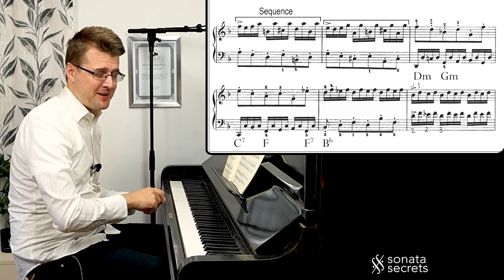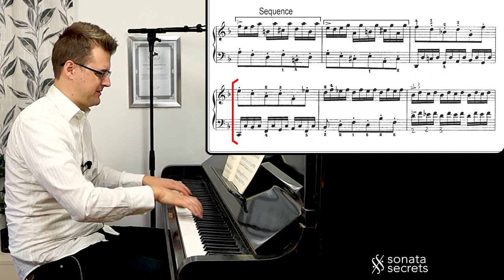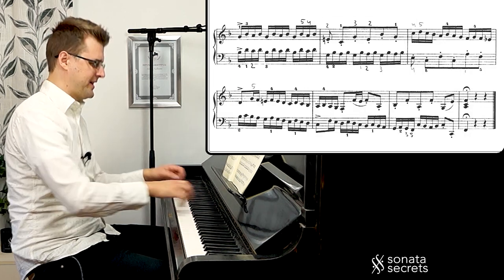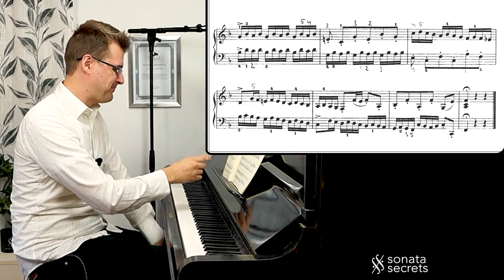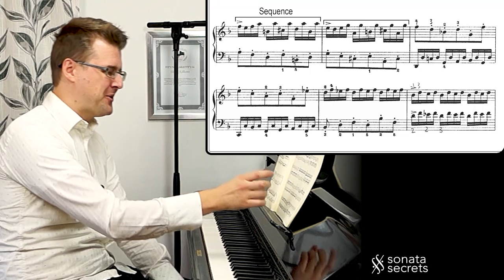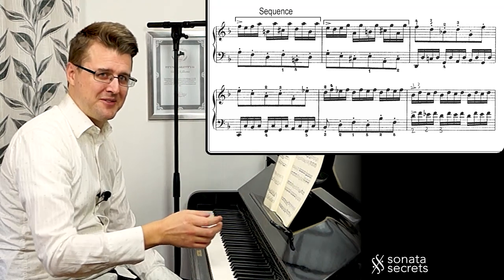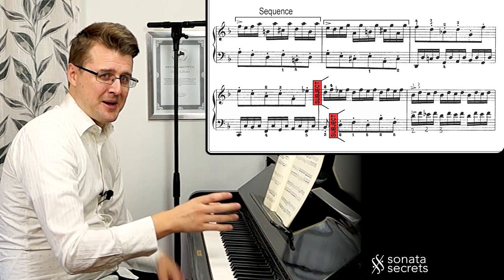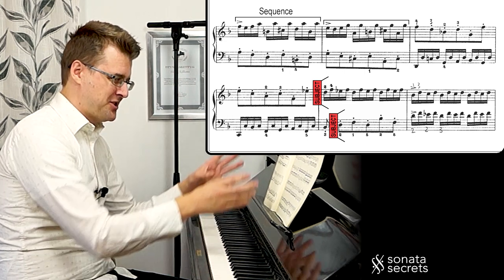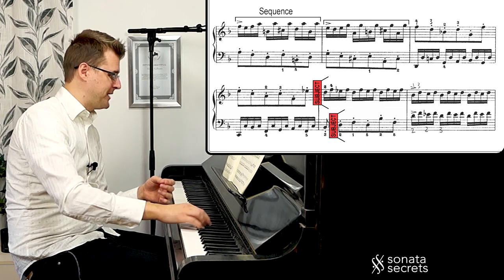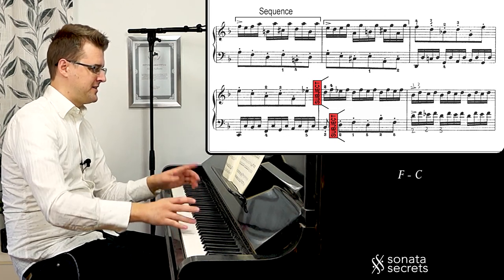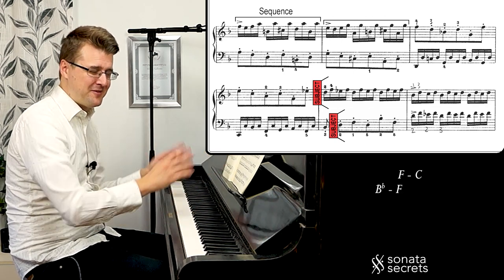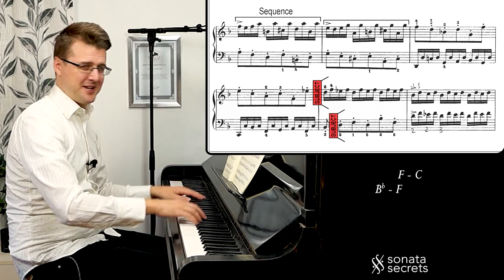When we get to B flat major we recognize it — this is the same as what we had in the beginning. It's the second part of the subject, a kind of recapitulation, but starting in the middle of it — it sneaks up on you. From here it's a perfect repetition but in another key: the first exposition went from F major to C major, and now we go from B flat major to F major — just one fifth transposed. A very clear ending.